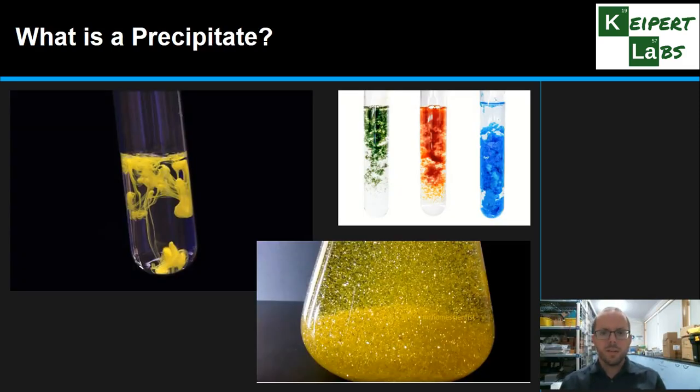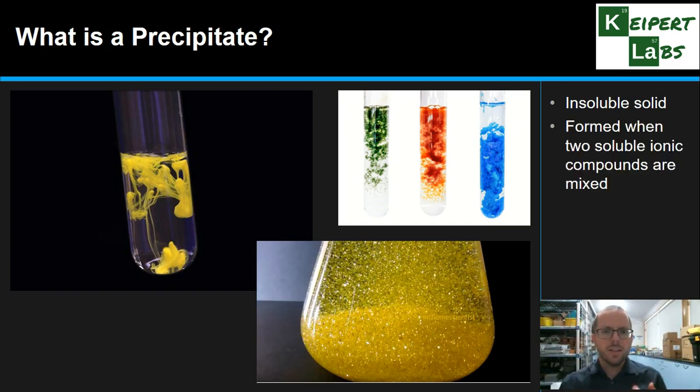So what is a precipitate? Well you can see some visual examples here that you've seen in the past that have formed in front of your eyes. We're talking about an insoluble solid, and it's not just something that doesn't dissolve, but rather it's something that forms when we mix two soluble ionic compounds together.